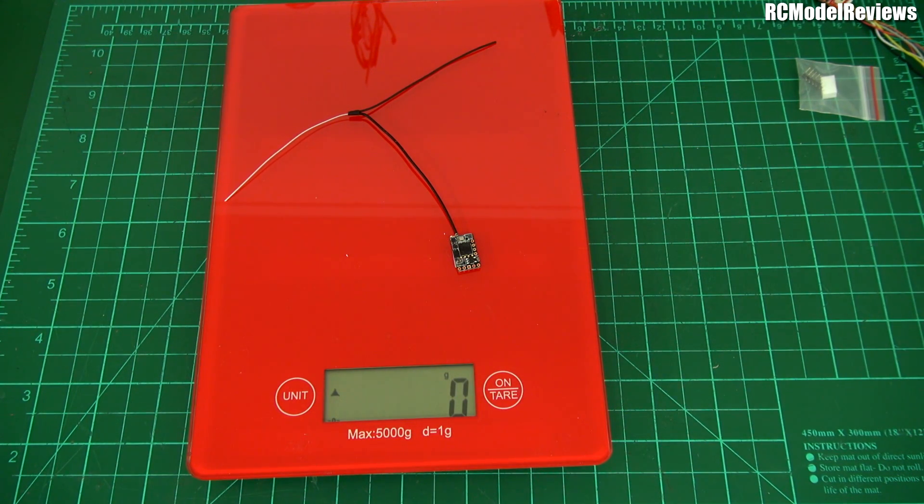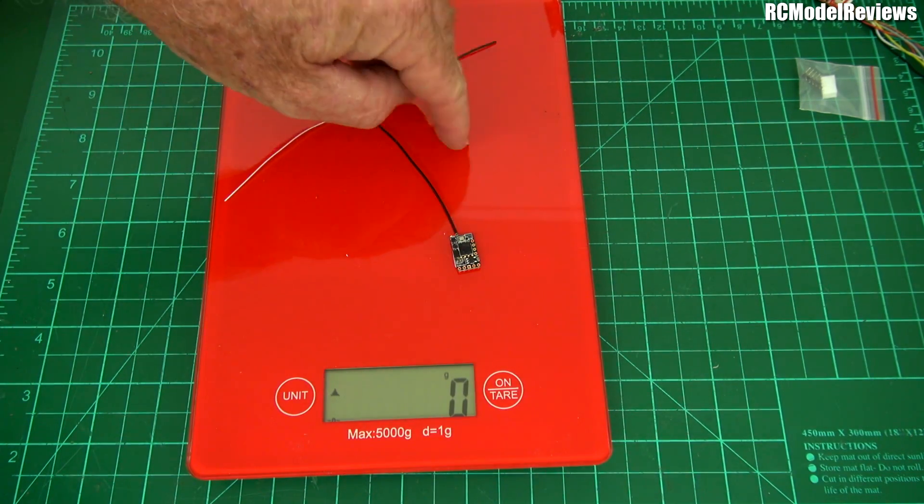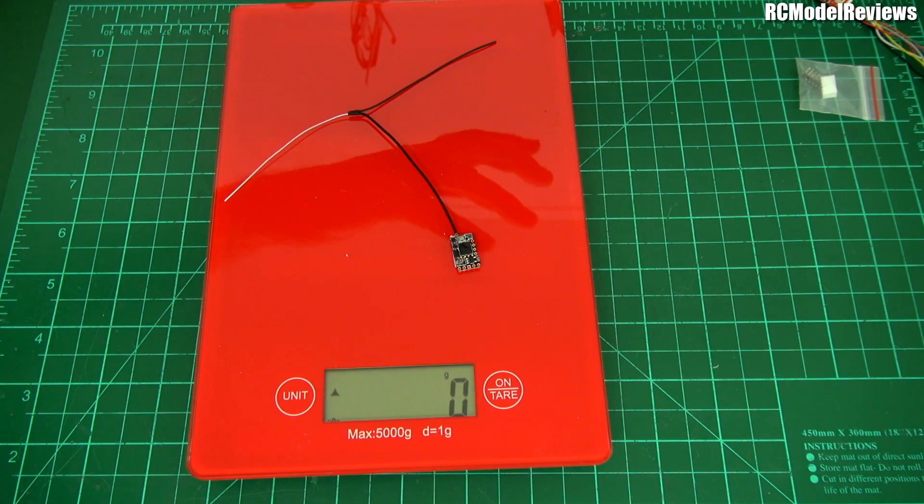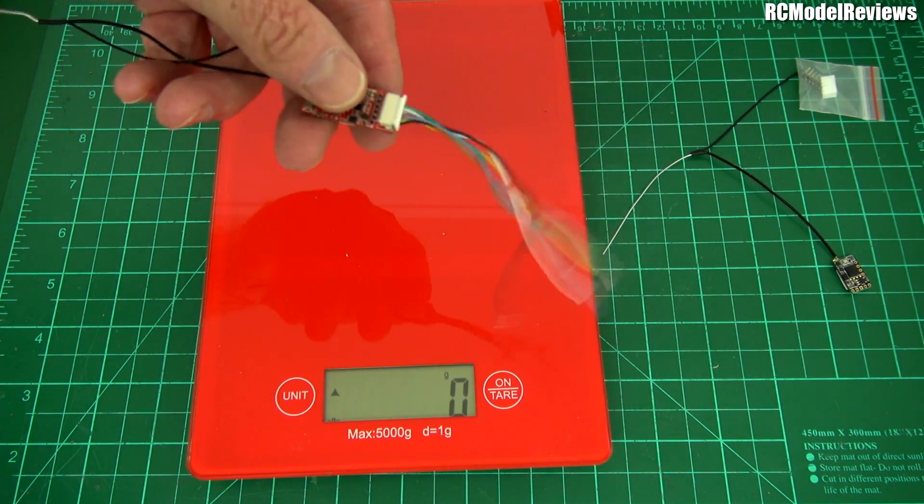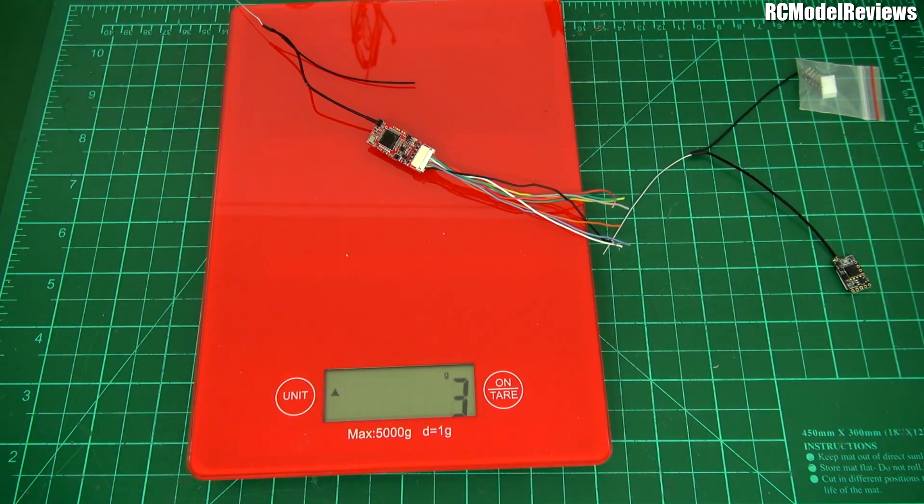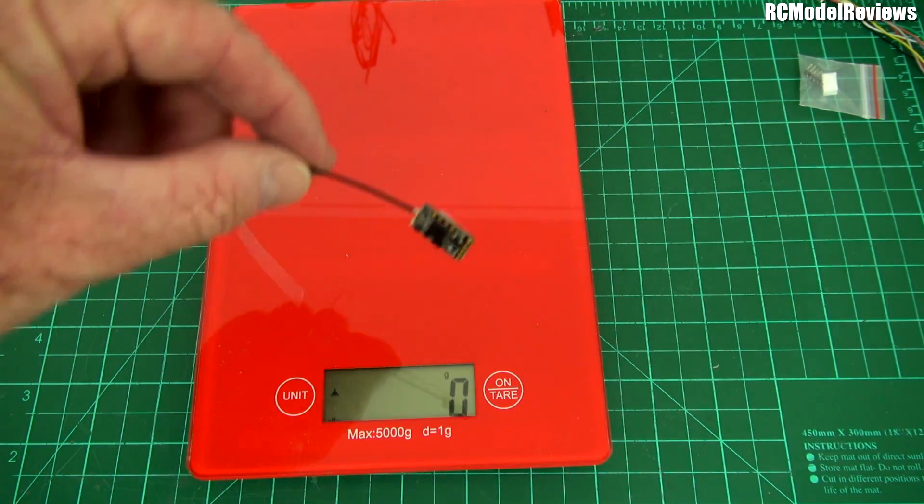It doesn't even weigh anything. It's actually lighter than air - it weighs nothing. That probably means it weighs under a gram. By comparison, the R9 slim with the white wires attached weighs in at three to four grams. So it is amazingly light. You won't even know it's on the model. Hopefully you will because the servos will move when you wiggle sticks.